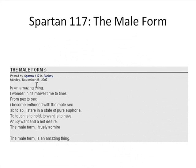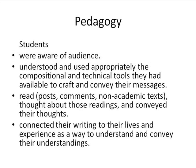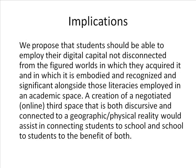Both Jake and Spartan 117 leave us with fairly complicated representations of their identity. Students were aware of audience, used the tools they were supposed to, and crafted sophisticated and nuanced messages. They read others' posts, talked about their literacies outside of school and brought them into school, and connected their writing to their lives. There was genuine engagement with their topics, and they conveyed that engagement and understanding to their audience. We propose that students should be able to employ their digital capital — not disconnected from the figured worlds in which they acquired it — alongside literacies employed in an academic space. The creation of a negotiated online third space, both discursive and connected to a geographic physical reality, would assist in connecting students to both school and school-to-student, to the benefit of both.